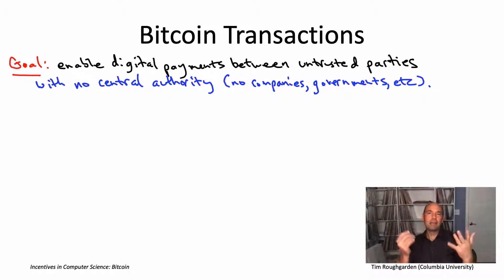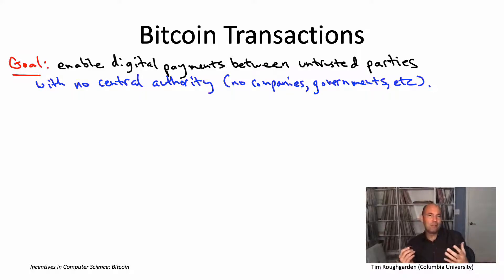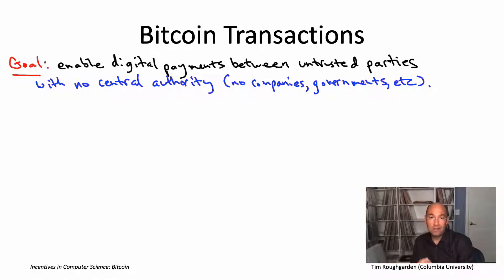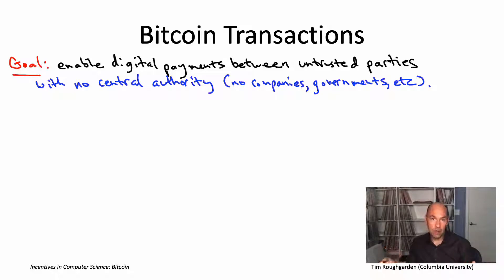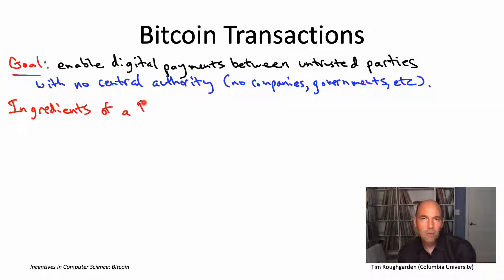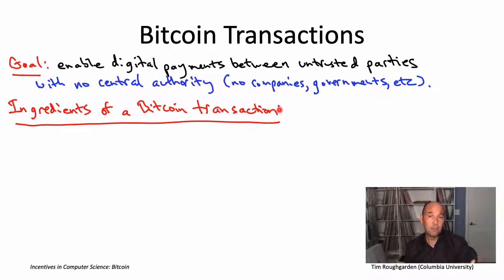Now, let's stop speculating about the future and let's return to something concrete, which is Bitcoin and how it actually operates. So the key primitive in Bitcoin is the notion of a transaction, which is really a transfer of funds from one party to another. Let me tell you about the ingredients in a Bitcoin transaction. I'm going to talk about those ingredients at a conceptual level. I'm not going to worry about sort of nitty-gritty implementation details.